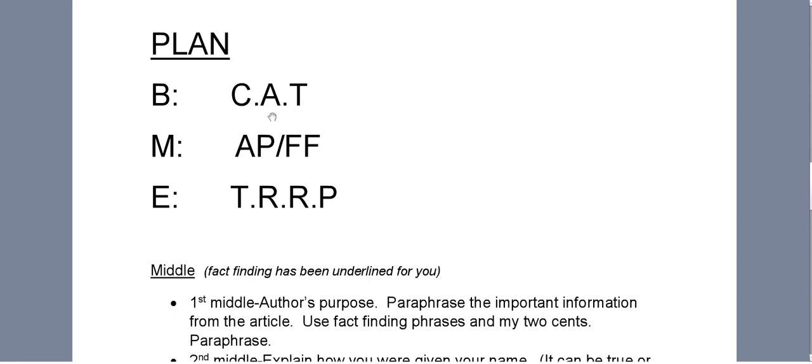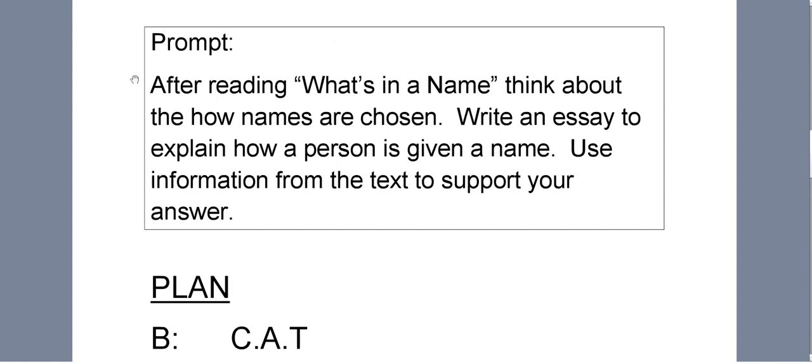The A stands for asking. You have three choices when doing your asking. You can look at what the prompt is asking. The prompt says, think about how names are chosen. So you can write, names are chosen in many ways. You can ask a question. How did you get your name with a question mark? Or you can ask yourself the topic and use it in a sentence. The topic is names, so you might say, a lot goes into choosing a name. Please write your asking sentence. You can write a question, you can use the prompt, or you can use the topic. Do this now.